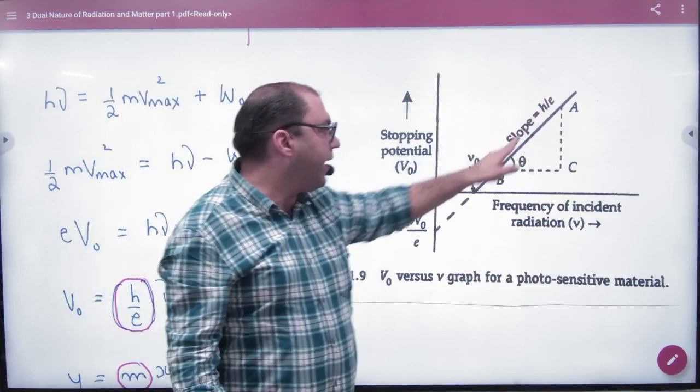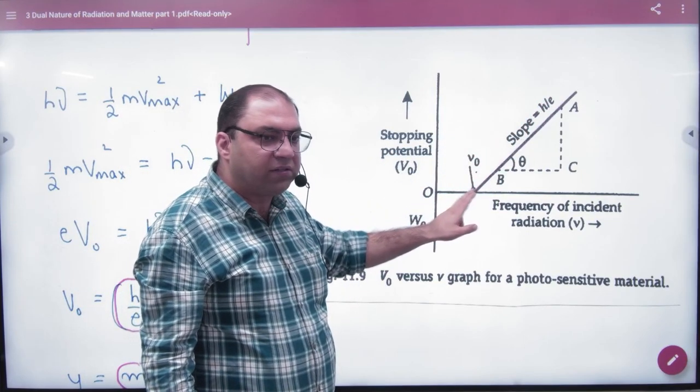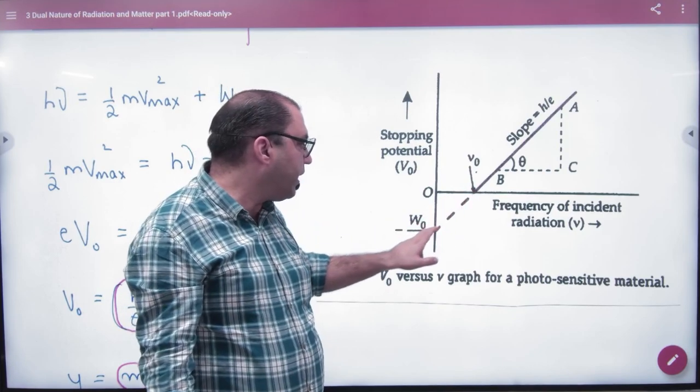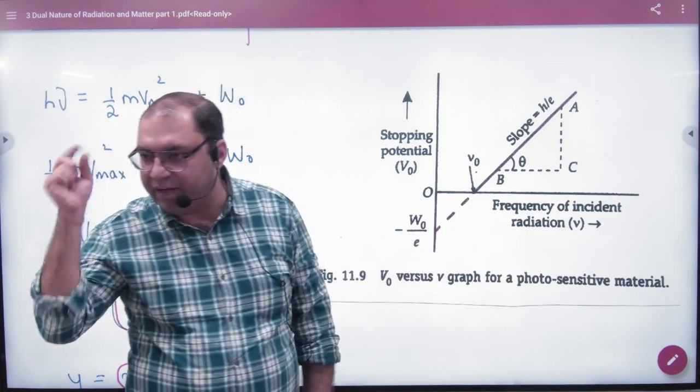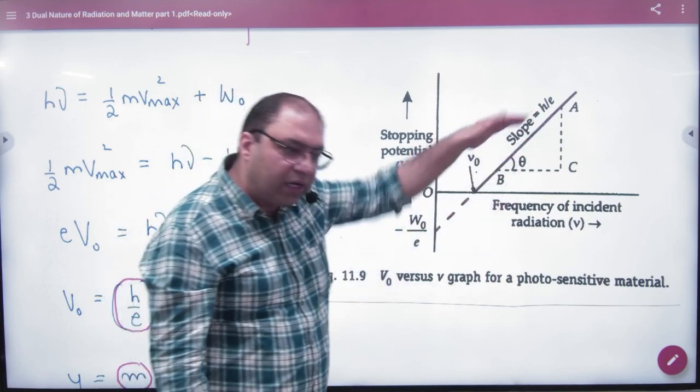Now how is this graph? This graph is like this - slope is h/e and this is threshold frequency where it will start. And this dotted line which is cut here is intercepted. Because the intercept is negative minus W₀/e, the y-axis will have negative intercept. So this graph you have to plot.